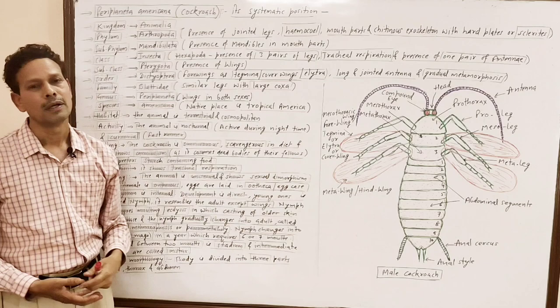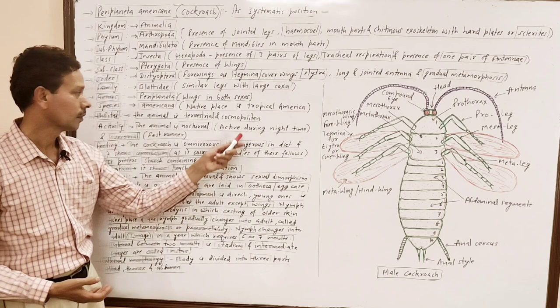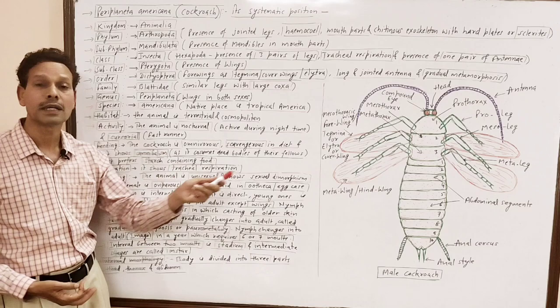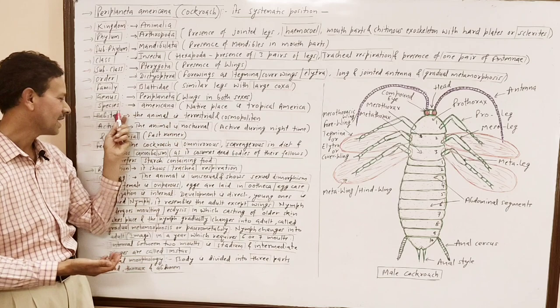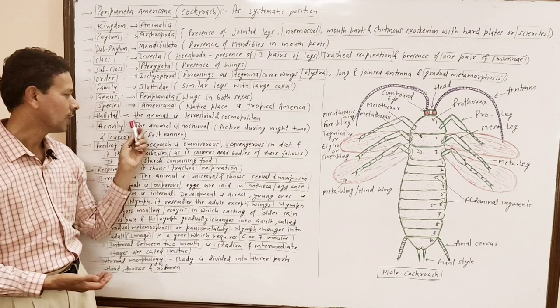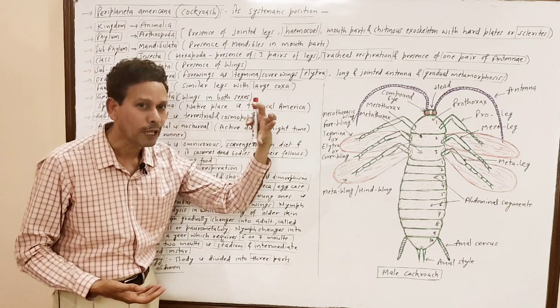Activity: the animal is nocturnal — it becomes active during night time. A very important point: it is cursorial, meaning it shows a fast running habit and is a fast runner. Compare this with earthworm, which was fossorial — found in burrows — while cockroach is cursorial.